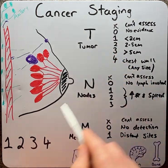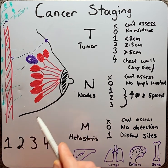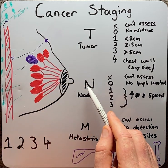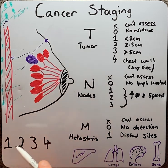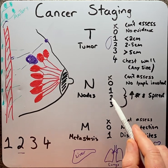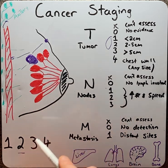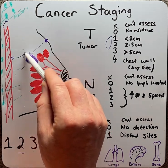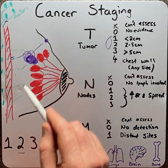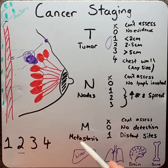How does this system manifest into the four stages? Stage 1 means the tumour is relatively small, but there's no evidence of nodal involvement or metastasis. Stage 2, the tumour is getting to a larger size, and there may be a small number of nodes involved, but no metastasis. Stage 3, the tumour is getting quite large, or may even manifest into the wall or the skin, with an increased number of node involvement, but no metastasis.